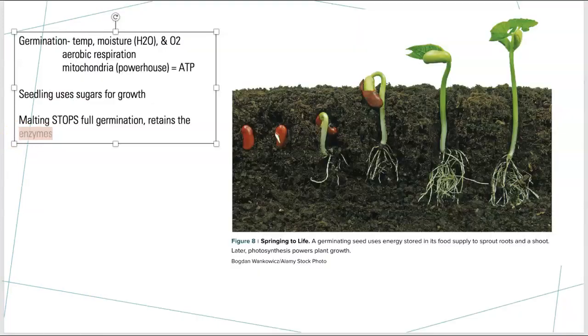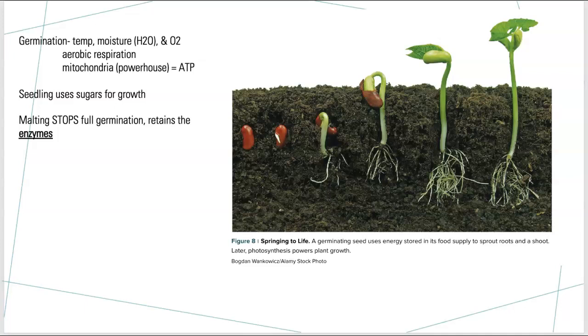But the key here is it retains the enzymes. Bold that and underline that. The malting process retains the enzymes produced by the seed, by the embryo, and it's the enzymes that are important for the rest of this pathway because the enzymes help break down the starches and convert the starches to the sugars we want before we feed it to the yeast. So again, remember with malting, this is all happening before the yeast are added.